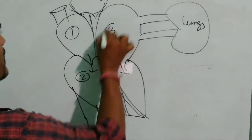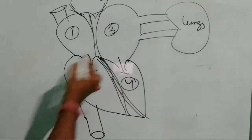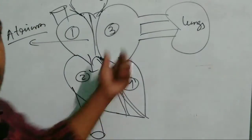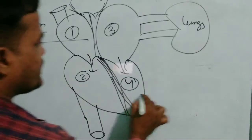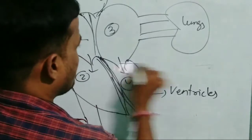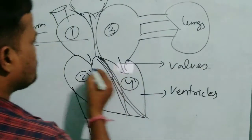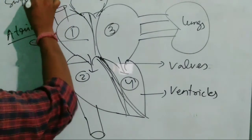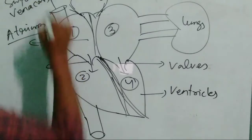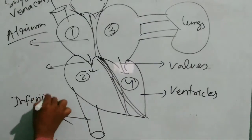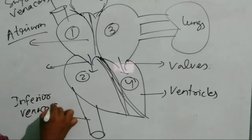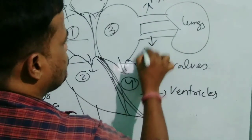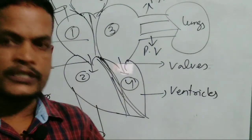There are four chambers of the human heart. The upper chambers are called atria — this is one atrium and this is another atrium. The lower chambers are ventricles. There are valves — the tricuspid valve and the bicuspid valve. Other structures include the superior vena cava, inferior vena cava, aorta, lungs, pulmonary artery, and pulmonary vein. In a later class, we will go into more detail about this chapter. Thank you.